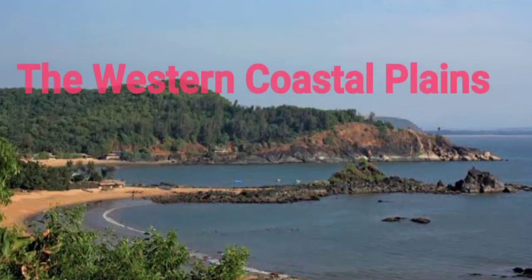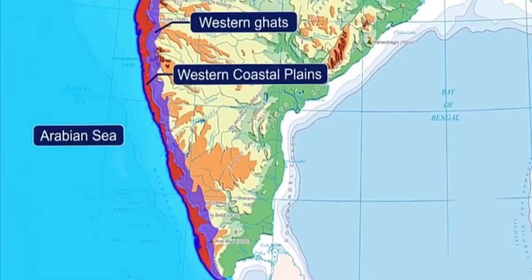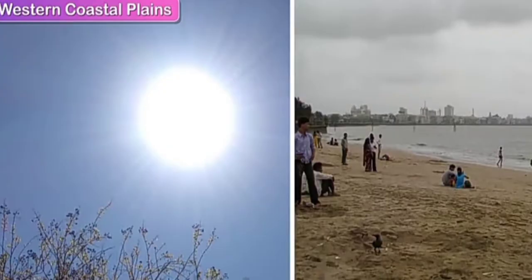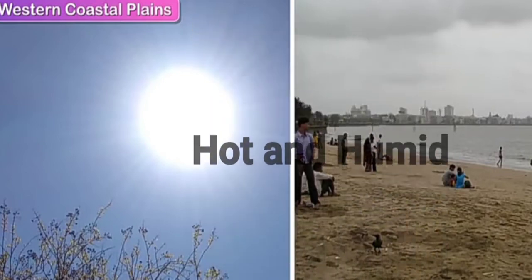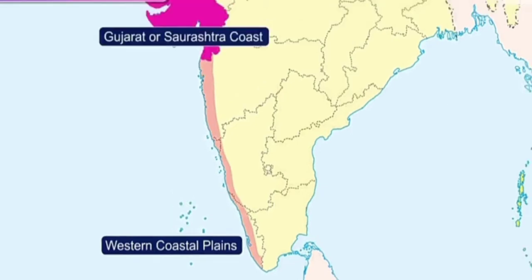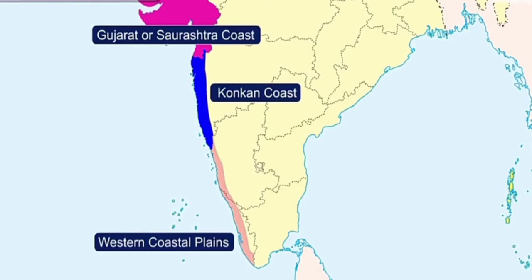Let us study about the western coastal plains. The western coastal plains form a strip of land lying between the Western Ghats and the Arabian Sea. They begin in Gujarat at the Gulf of Kutch, going southwards through the western parts of Maharashtra, Goa, Karnataka, Kerala, and right up to Kanyakumari, which is the southernmost tip of the Indian mainland. The climate here is hot and humid throughout the year. The western coastal plains are divided into three parts: the Gujarat or Saurashtra coast (also called Kathiawar coast), the Konkan coast, and the Malabar coast.